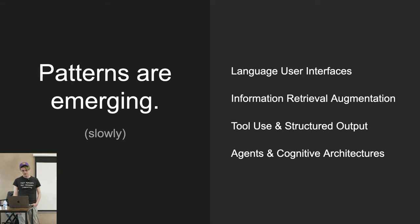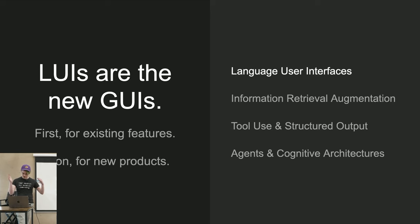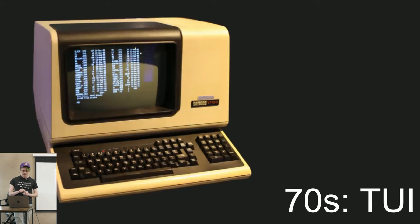Architectures and patterns — the excitement around this stuff has been around for about a year, and patterns are starting to emerge very slowly of typical ways you might apply these things. My favorite way of thinking about this in general is that the things we're building right now are language user interfaces — LUIs — by analogy to GUIs or graphical user interfaces. First they're hitting existing features; soon they'll be for completely new whole products.